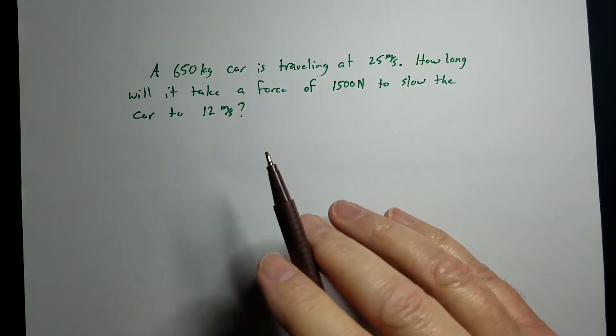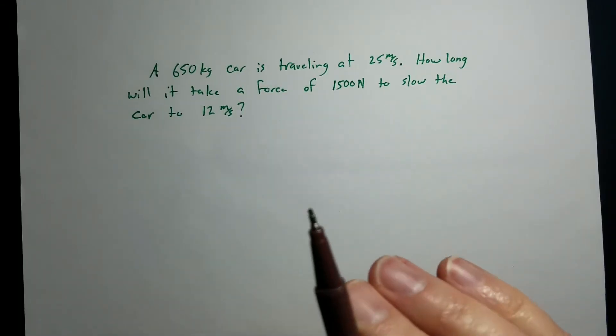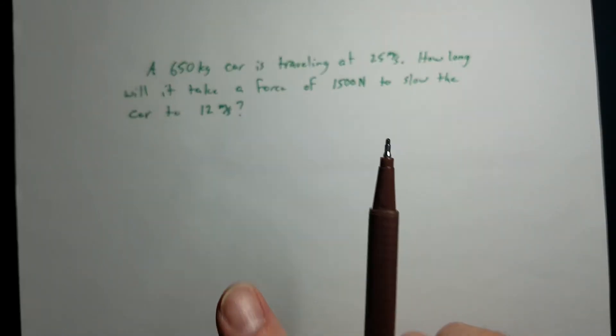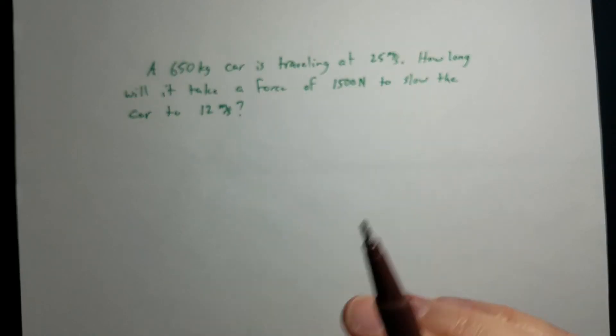Now, we've got a 650 kg car traveling 25 meters per second. There's a force applied to it to slow it down this time to a speed of 12 meters per second. And we want to know how long that takes. So, we're looking for a time.